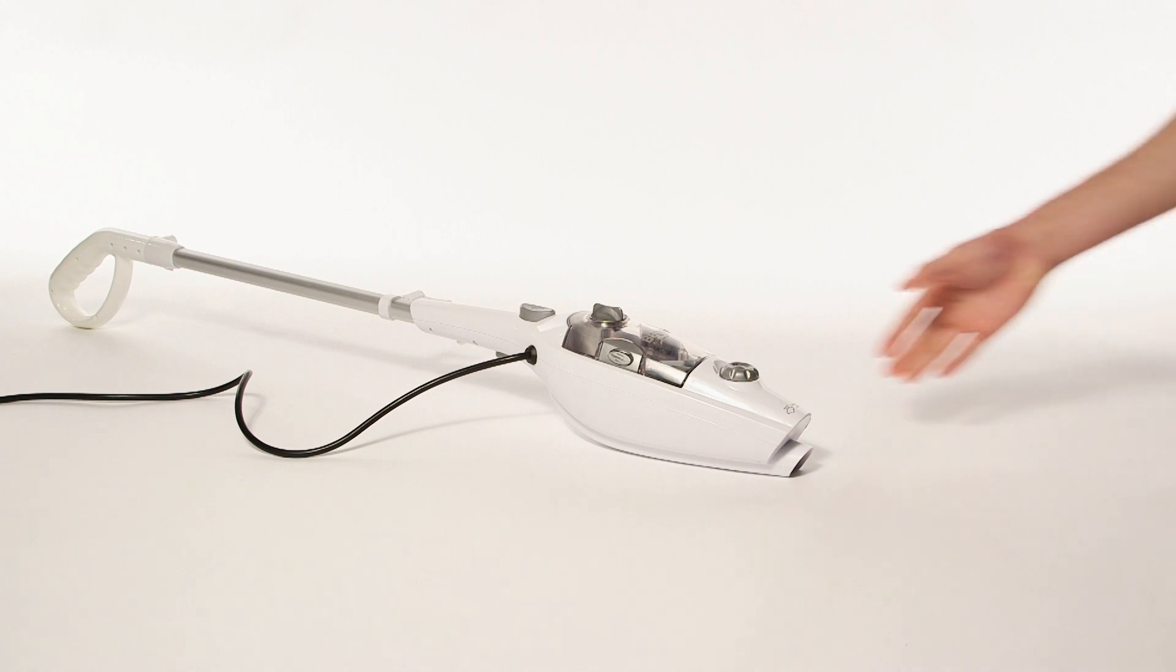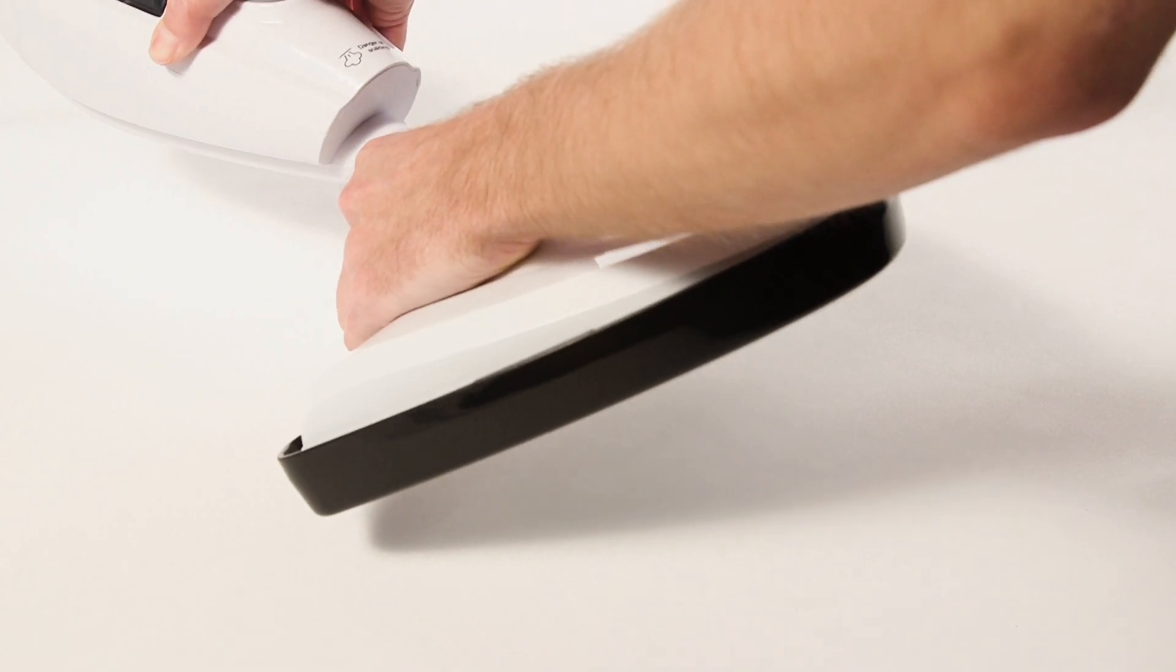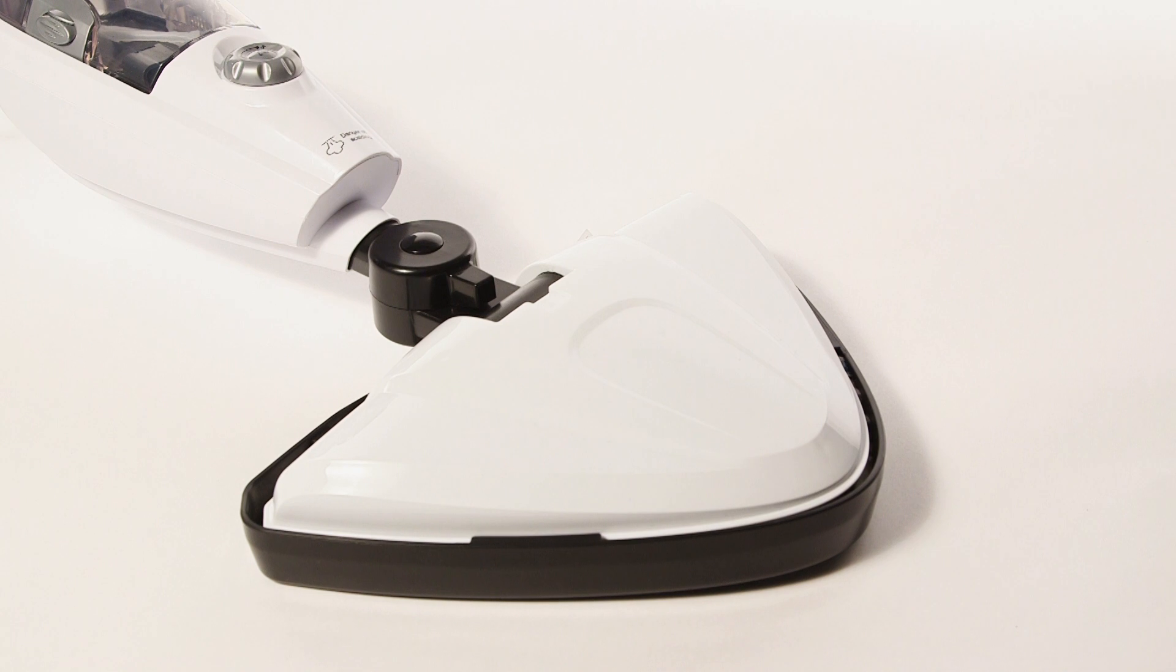To attach the floor head, insert the neck of the floor head into the body of the steam cleaner until it clicks into place.